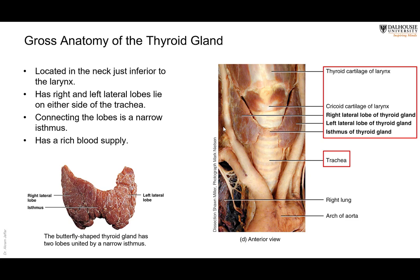The first gland we are going to describe today is the thyroid gland, located in the lower part of the neck, as you can see here. The thyroid gland looks like a butterfly, so it has two lobes. Each lobe is pear-shaped, and the two lobes are connected with each other by a narrow isthmus, which crosses over anterior to the trachea. The thyroid gland, like any other gland in the body, has a rich blood supply, because glands require rich blood supply since they secrete their secretion to the blood.